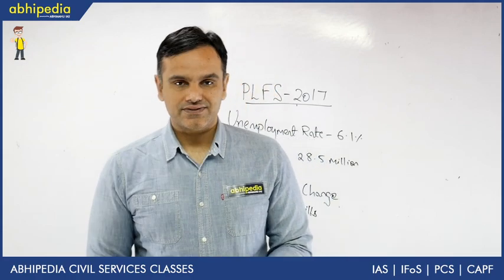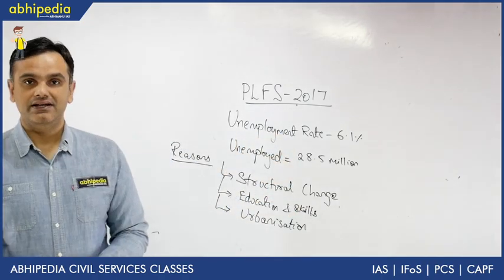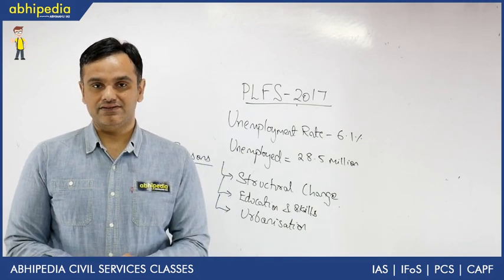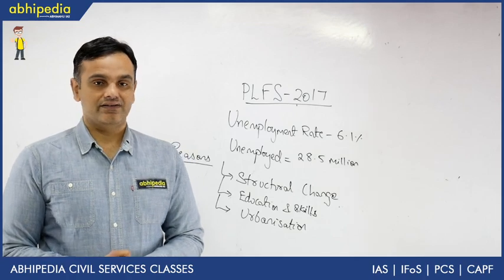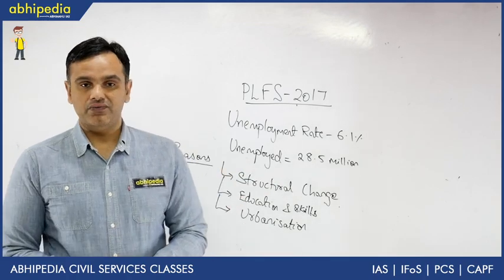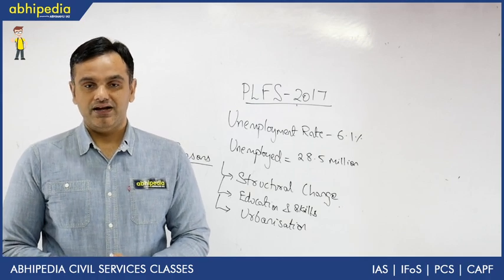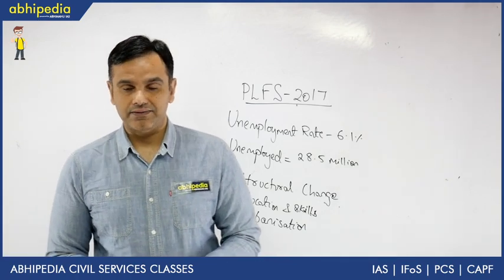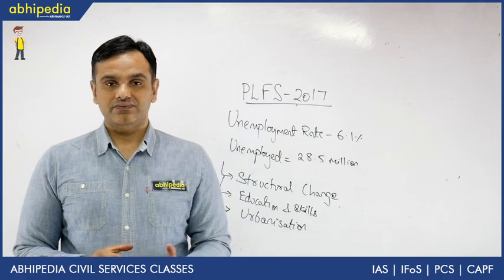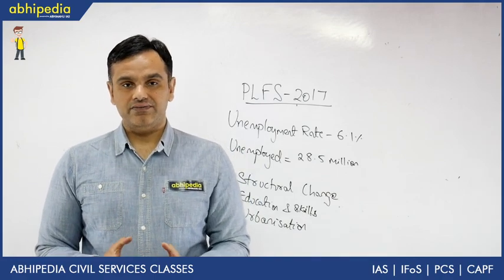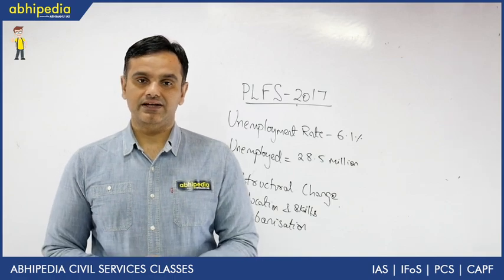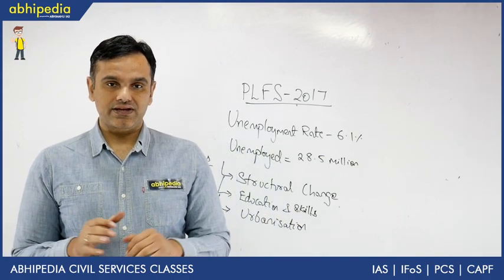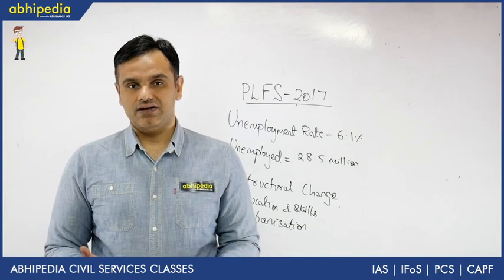There was a PLFS survey recently conducted in 2017, and as per this survey the unemployment rate in India has come out to be an alarming 6.1%, which is the highest since 1977-78. The number of unemployed in India has gone up to 28.5 million people, compared to 10.5 million in the last survey conducted about 10 years back. This is a very alarming situation — on one side we talk about demographic dividend, and on the other side people are unemployed, meaning that demographic dividend is not going to come.